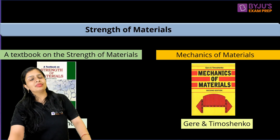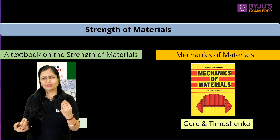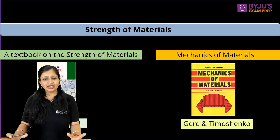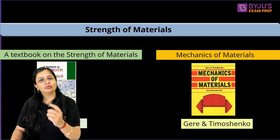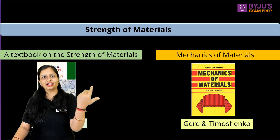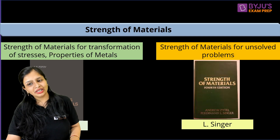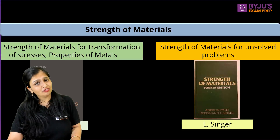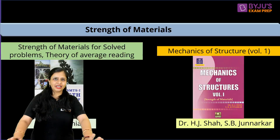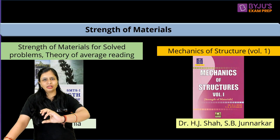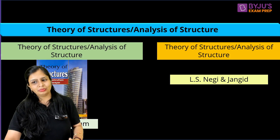Now let's talk about books for ESE 2024. Everyone has a different preference for a book's language and style. For Strength of Materials, you can go for UC General, Rajput, or Ramamurtham — personally I like Ramamurtham. For Mechanics of Materials you can use Gere and Timoshenko. For transformation of stresses and properties of materials you can also refer to foreign authors. For problem solving, Elsinger's book and BC Punamia are also options.